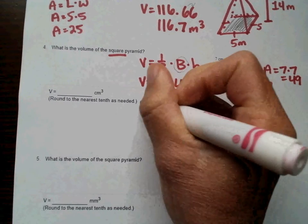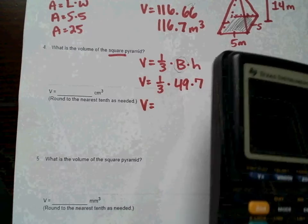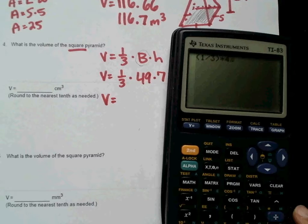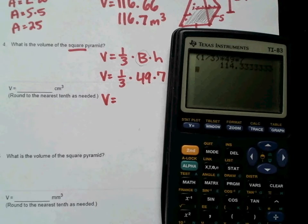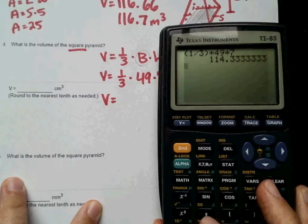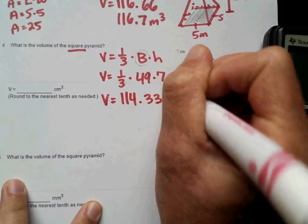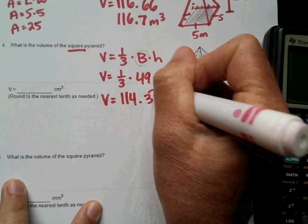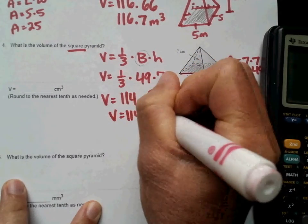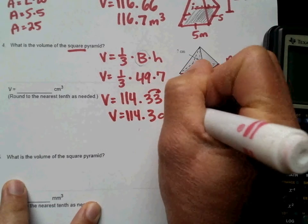It's round to the nearest tenth again. So, let's type it in here, one-third times 49 times 7, I get 114.3 repeating. 114.3 repeating. So, nearest tenth means I look at that digit, it's going to stay, because it's not 5 or more, so it's going to be 114.3 cubic centimeters.